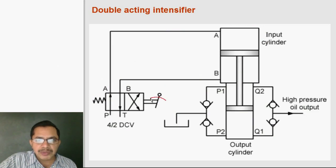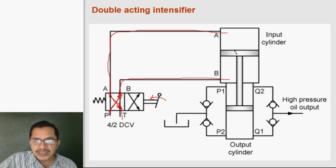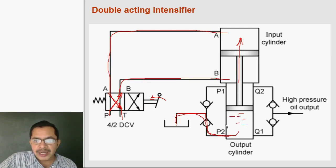When the lever is kept in the other position, there is a connection from P to B and A to T, so oil flows to the rod end port of the big cylinder and oil from the head end goes to the tank. During that stroke the piston moves in the upward direction, oil is sucked from the reservoir into port P2 at the bottom of the small cylinder, and oil above the piston in the small cylinder flows out through Q2 and is delivered to the system.